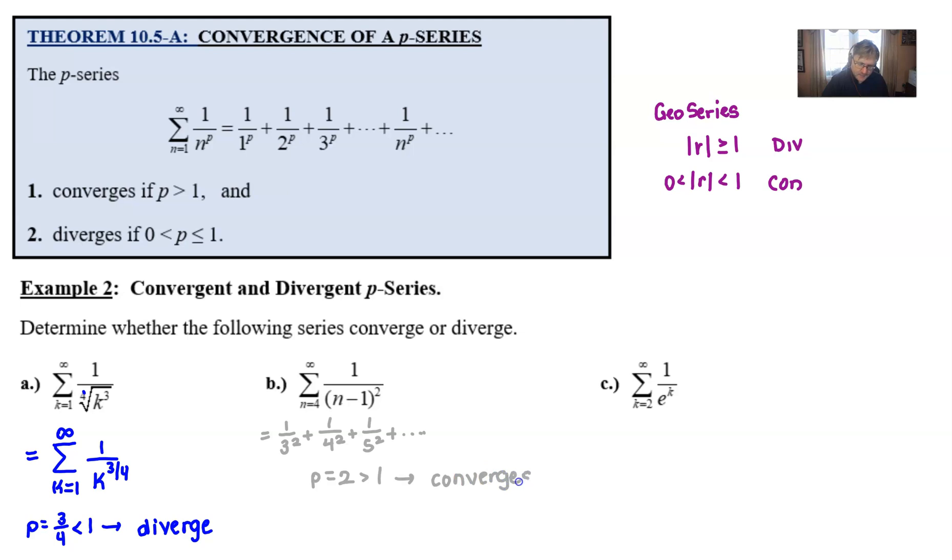Last one: summation as k goes from two to infinity of one over e to the k. It kind of gets confusing when you have all these different letters floating around. Remember that the base in the p-series here, n, is going to match whatever your index is. In this case, it would be k in part C. So I think we have our k in the wrong spot. In fact, if you looked at this in a little bit different vein, maybe you even remember seeing this a few topics ago, we could rewrite the series like this.